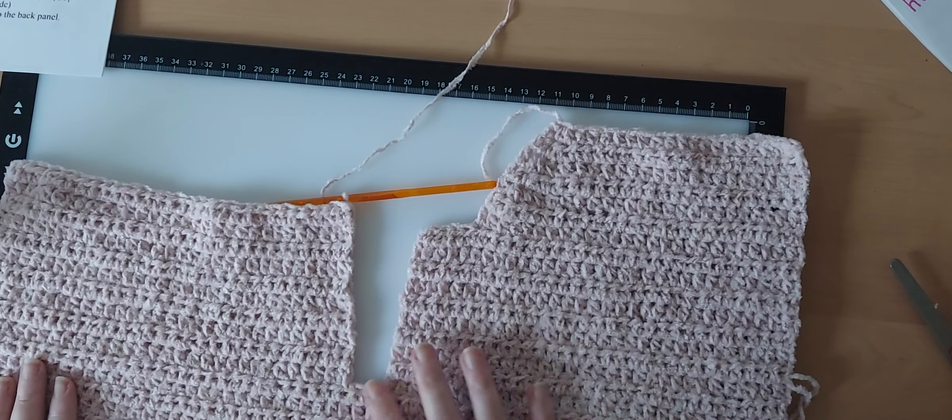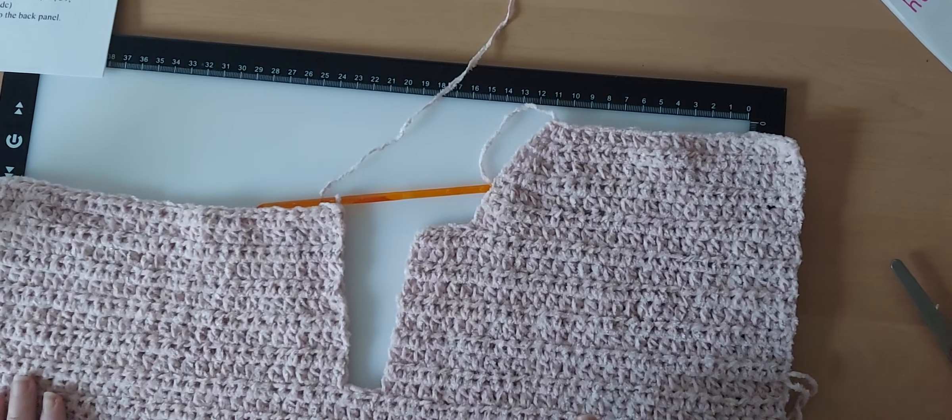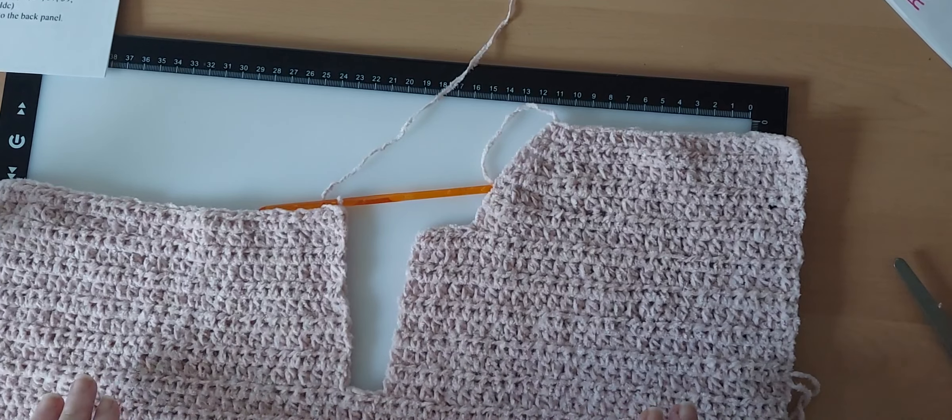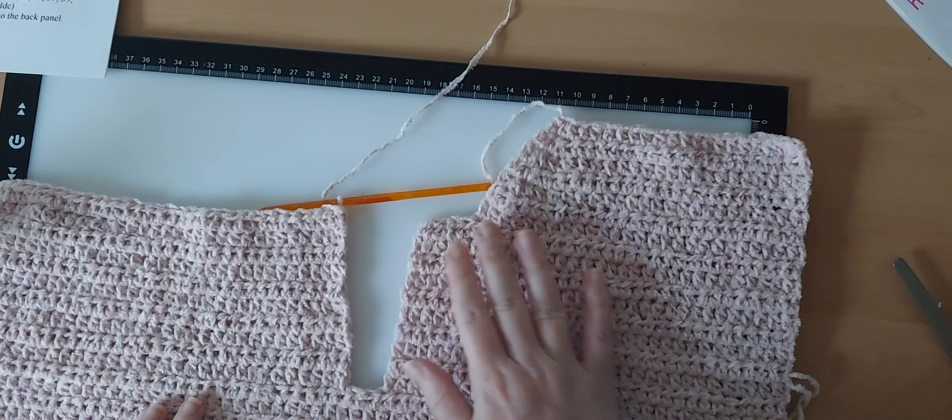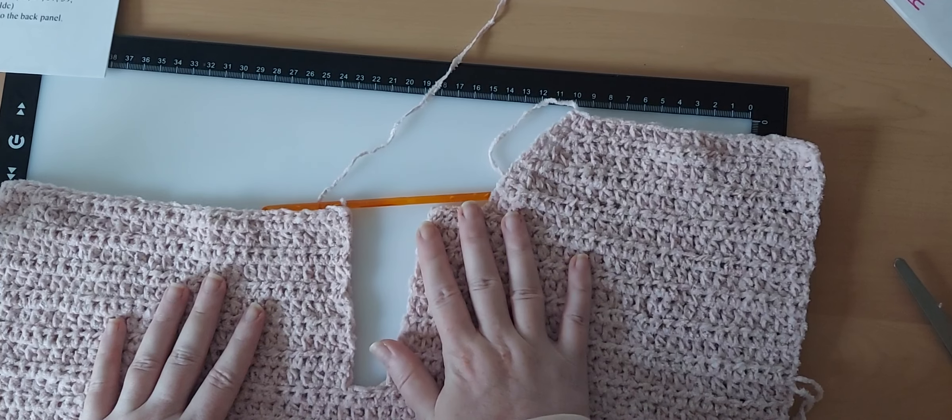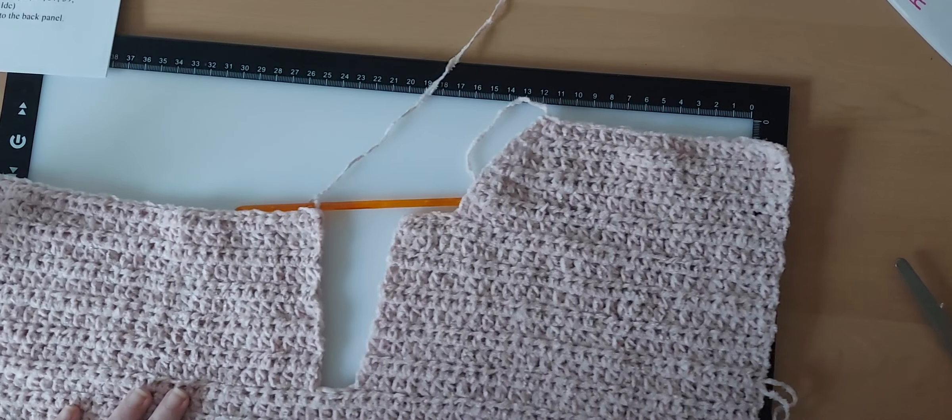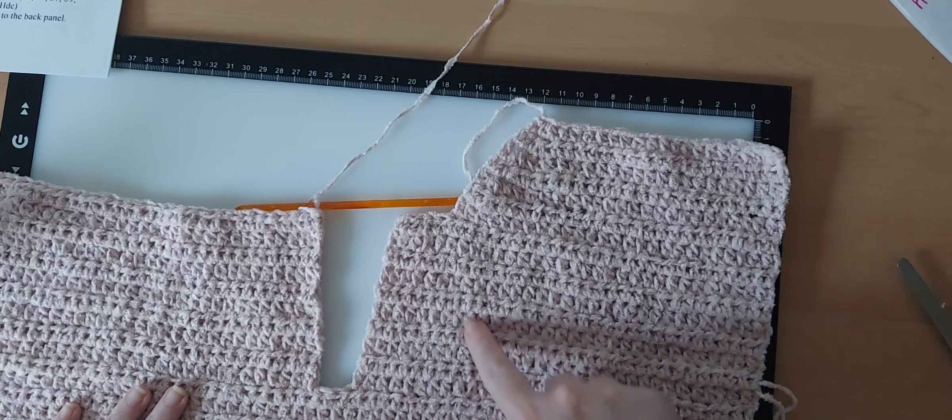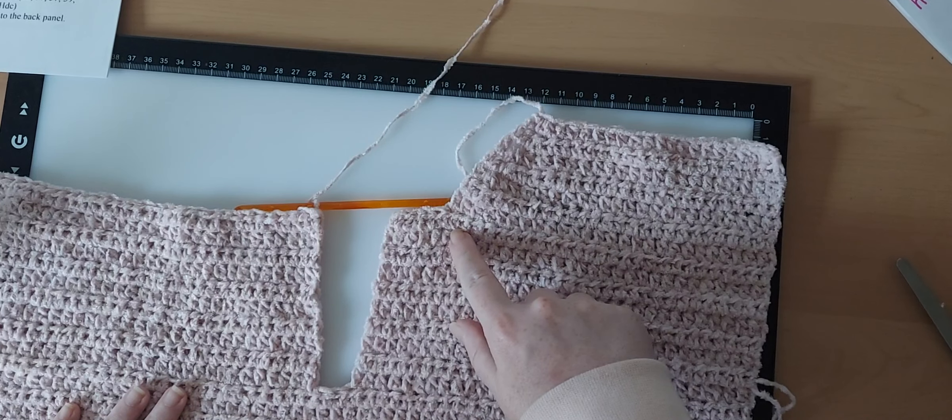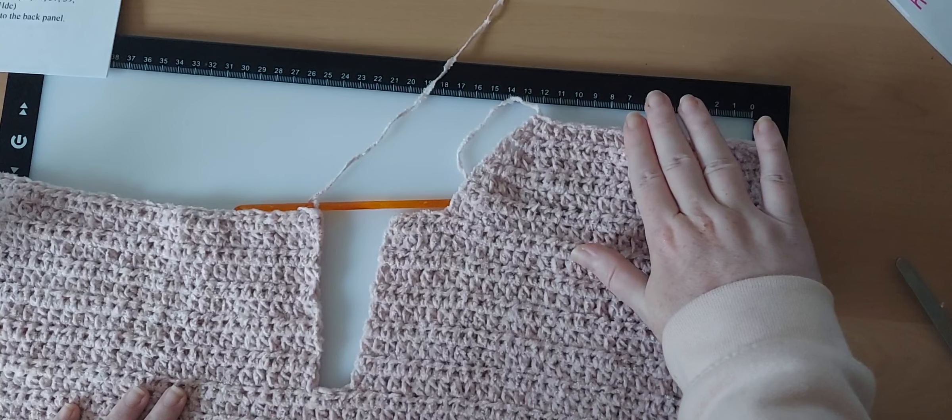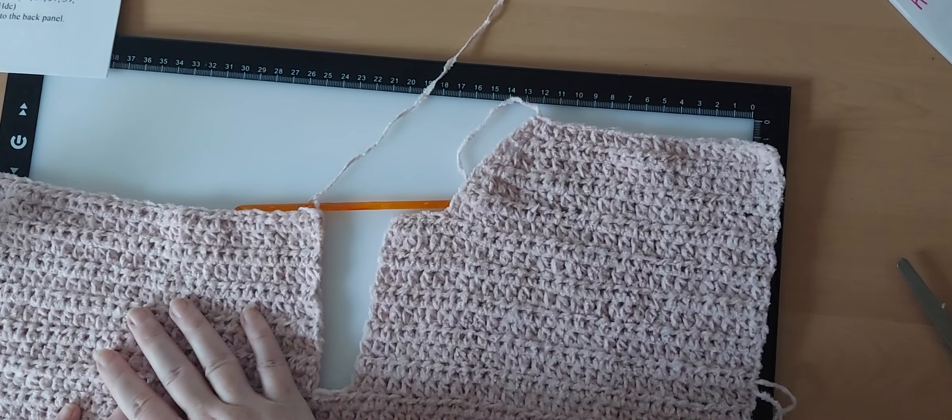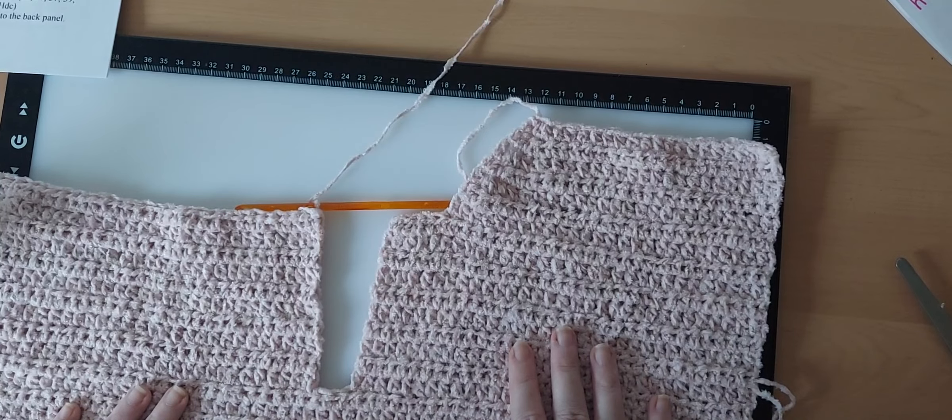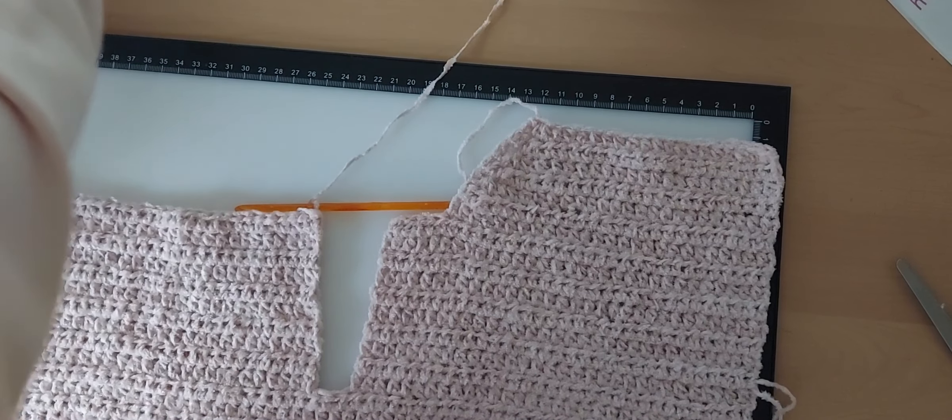Hi guys, we're back with part 3 of week 4 of the Hawthorne Hoodie Crochet Along. It is 2024, so if you did everything correctly, you should now have what looks just like this. In part 1 and part 2, we worked up our right shoulder and now we're working on our left shoulder.